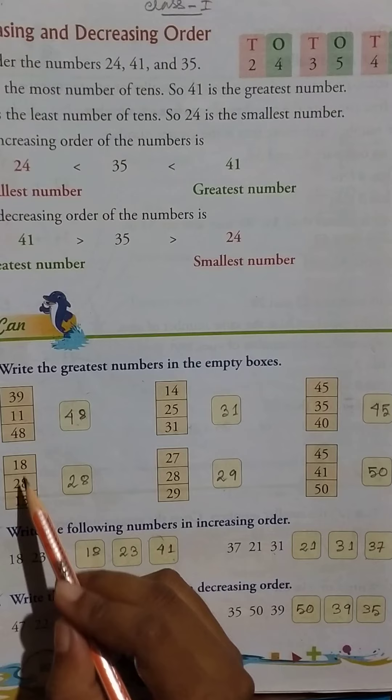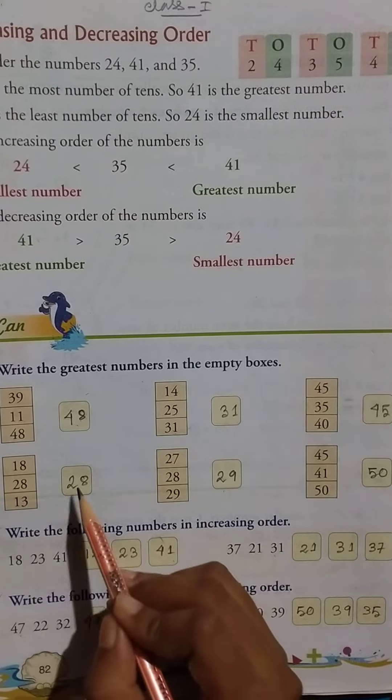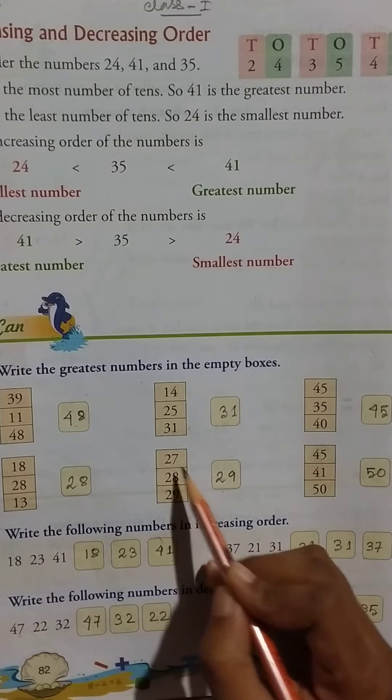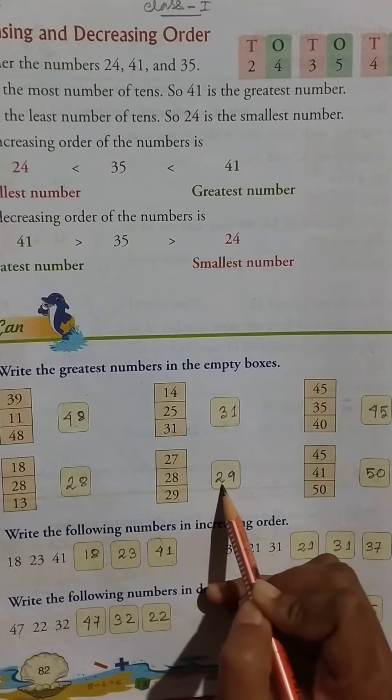Here greatest number 45. Then 18, 28, 13, so here 28. Then 27, 28, 29, so here greatest number 29.